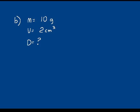For example, if an object has a mass of 10 grams and a volume of 2 cubic centimeters, density equals mass over volume, which is 10 grams over 2 cubic centimeters. Simplifying the numerical part, 10 over 2 is 5, so the density is 5 grams per cubic centimeter.